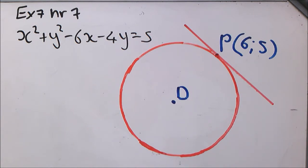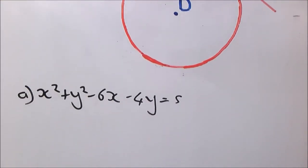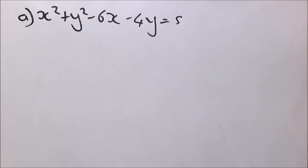The very first question is what's the coordinates of D, the center of the circle. The equation is given in general form, so we have to convert it into standard form and we'll do that by completing the square.